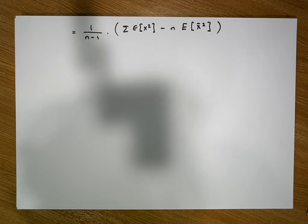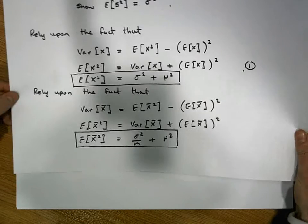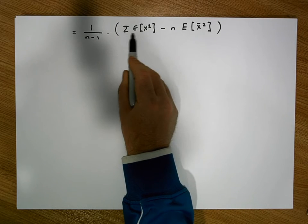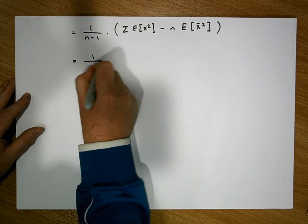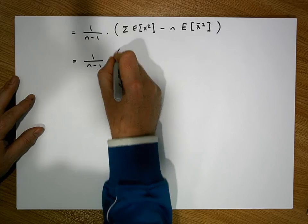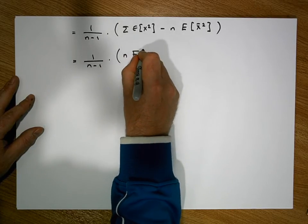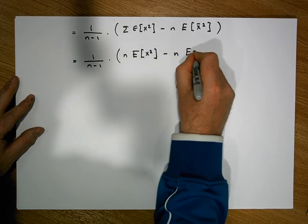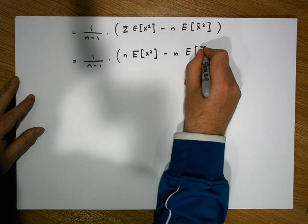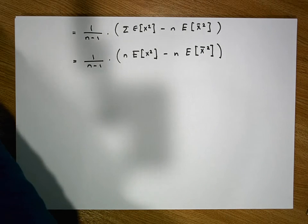What we've already shown earlier on is that the summation of these expectations gives us n of these terms. So this becomes equal to 1 over n minus 1 times n times the expected value of x squared, minus n times the expected value of x-bar squared.